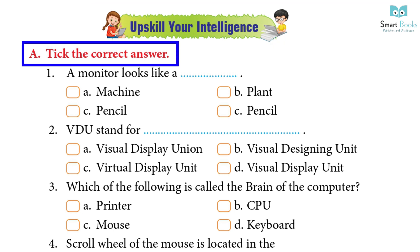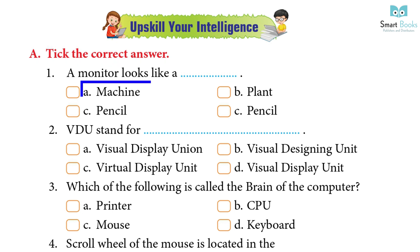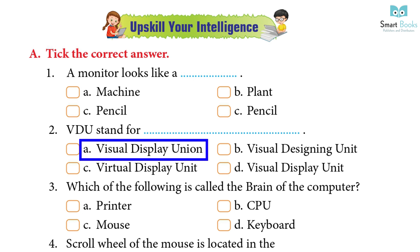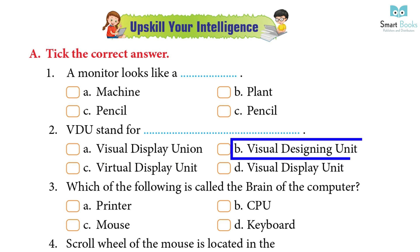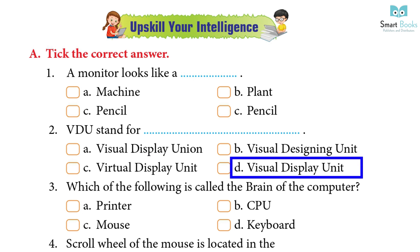Upscale your intelligence — Choose the correct answer. A monitor looks like a: A) Machine, B) Plant, C) Pencil, D) Television — Answer: A) Machine. VDU stands for: A) Visual Display Union, B) Visual Designing Unit, C) Virtual Display Unit, D) Visual Display Unit — Answer: D) Visual Display Unit.